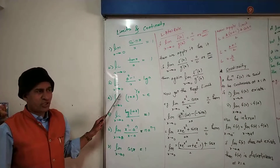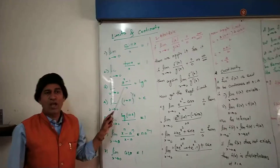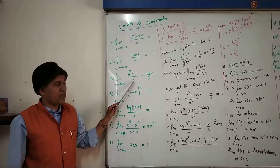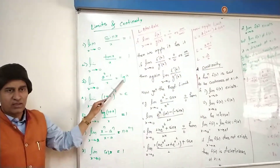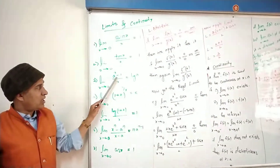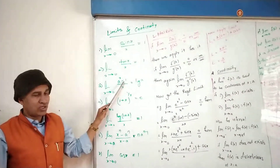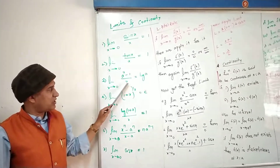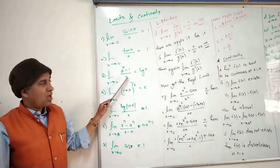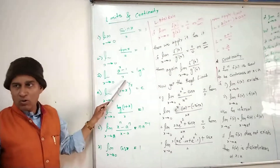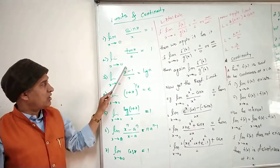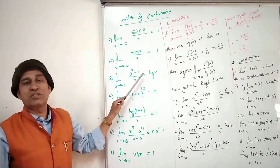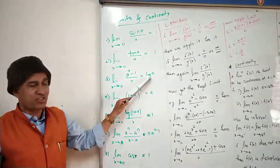Lim x tends to 0, a raised to the power x minus 1 upon x is equal to ln(a). Note that the minus 1 is necessary here. Whatever the power of x is — whether it is 6x or any base power — the same expression must appear below. Only then can you write ln(a).